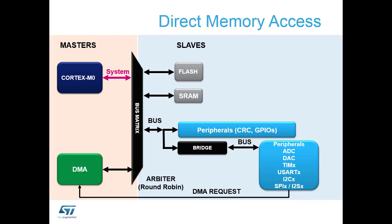Inside the STM32 architecture, there are two masters on the bus matrix: the Cortex core and the DMA. Because the DMA is a bus master, it can access all of the slaves connected inside the architecture — the memories, flash, SRAM, and all the peripherals. This means the DMA can route information streaming in from any peripheral — ADC, UARTs, SPI — directly into the SRAM, filling a data buffer while the core is either asleep saving power or processing another task.